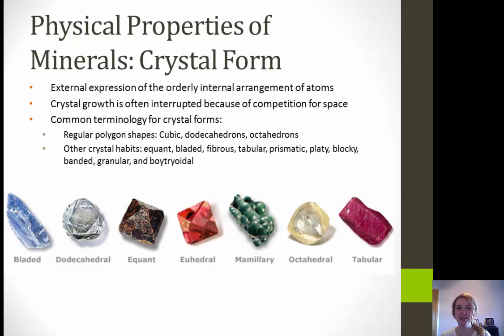Here's some common terminology. We have the regular polygon shape — cubic, dodecahedrons, octahedrons, that sort of thing. For other crystal habits, we have equant, which means equal in all directions; bladed; fibrous; tabular; prismatic; platey; blocky; banded; granular; and one of my favorites — botryoidal.